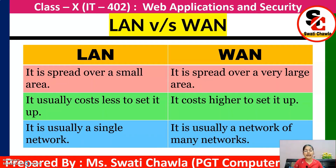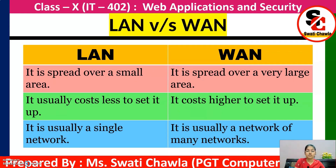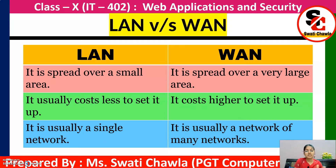Now let's understand the difference between LAN and WAN. LAN stands for Local Area Network and WAN stands for Wide Area Network. LAN is spread over a small area, confined to a building, and costs less to set up. WAN is spread over a very large area — all over the world — and costs higher to set up. LAN is usually a single network, whereas WAN is a network of many networks.